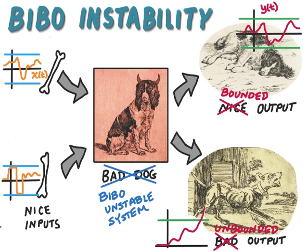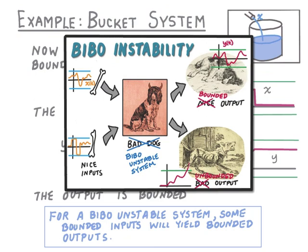Now it's important to note that some nice inputs might result in our bad dog producing a nice output. The key thing that makes the bad dog a bad dog is that it sometimes responds badly to a nice input. Similarly, the key thing that makes a BIBO unstable system BIBO unstable is that sometimes it responds badly to a nice bounded input. We saw this with our water bucket system earlier — some bounded inputs resulted in a bounded output, but other bounded inputs resulted in an unbounded output. The key thing for BIBO instability is that there exists a bounded input which will produce a bad output.